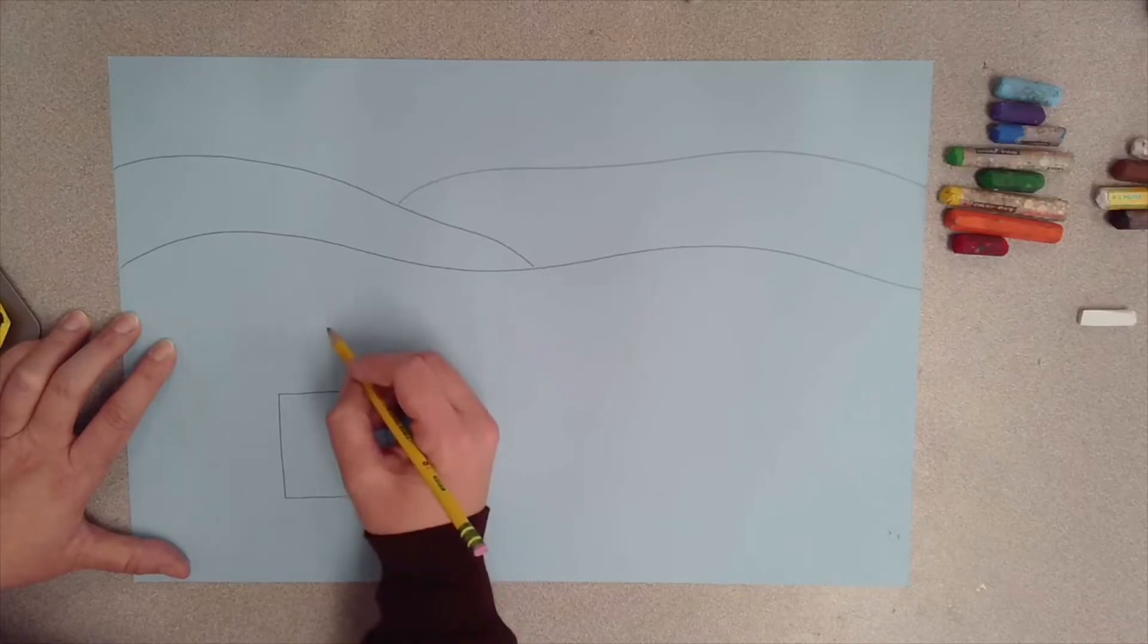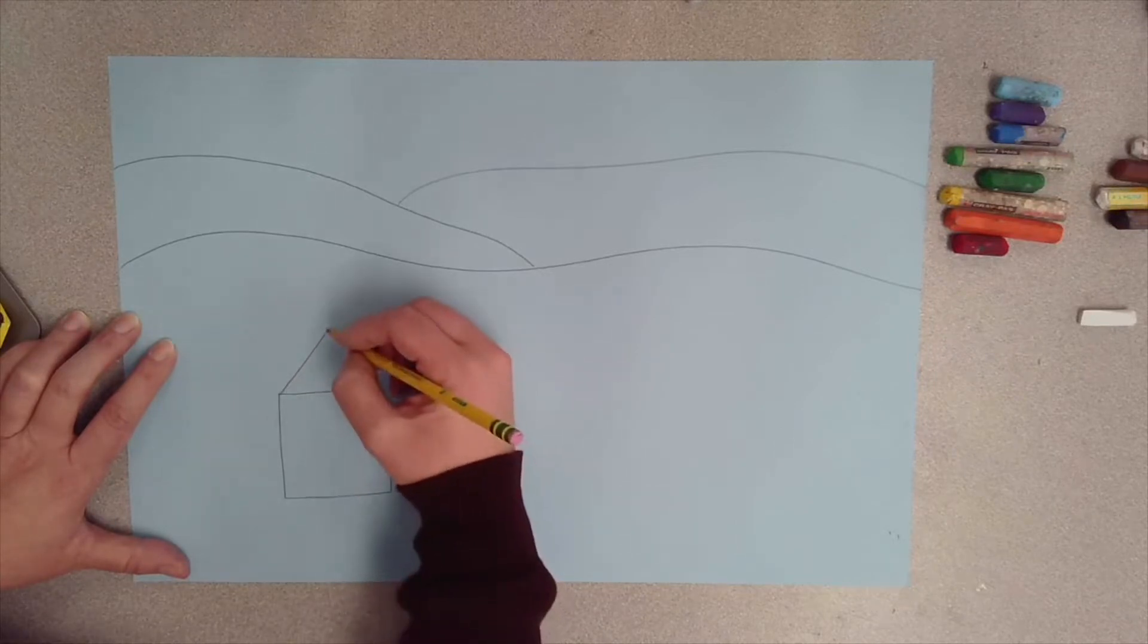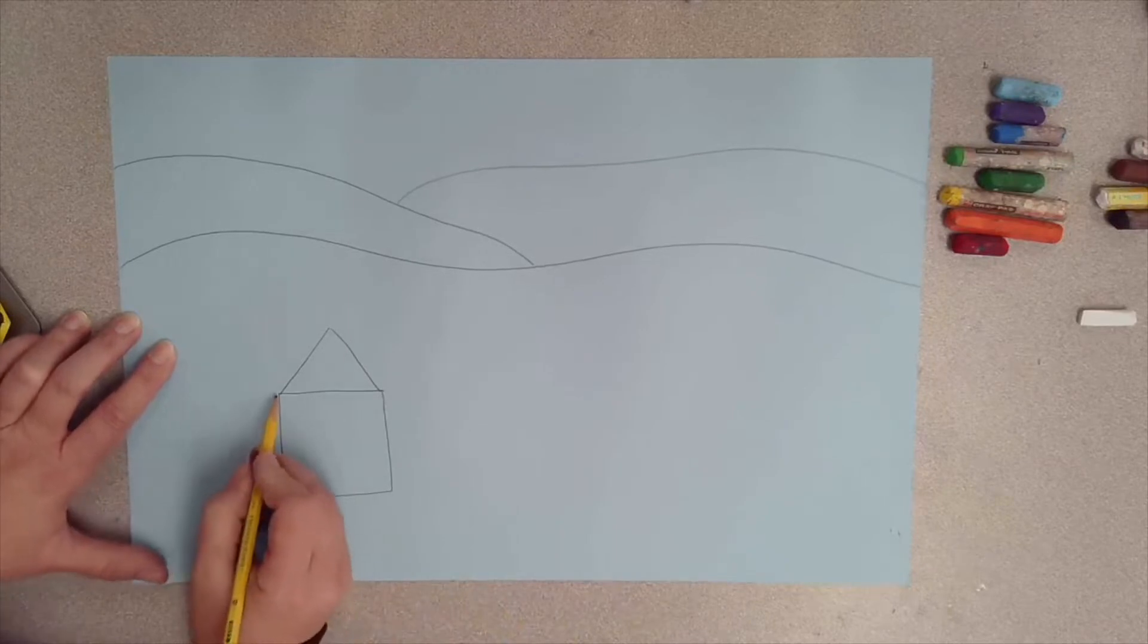Right now I'm drawing a barn. I'm starting off with a square and then a triangle, but I want my barn to be three-dimensional, so I'm going to add the side of the barn going back in the distance by drawing a rectangle on the side.